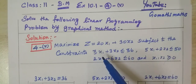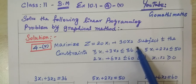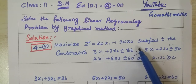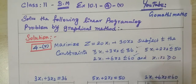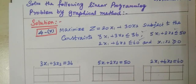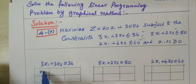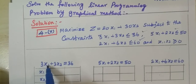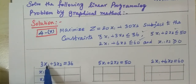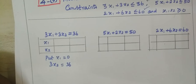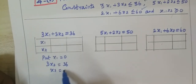Subject to the constraints — we have three equations and we can find their points of intersection. First equation: 3x1 plus 3x2 equal to 36. To find the intercepts, put x1 equal to 0 and substitute. Then 3x2 equal to 36.